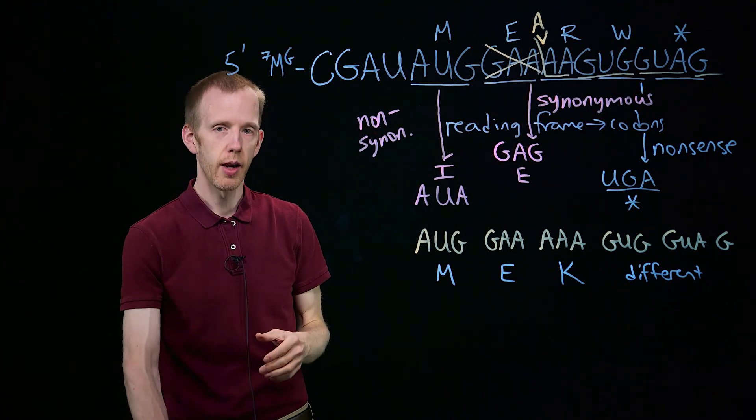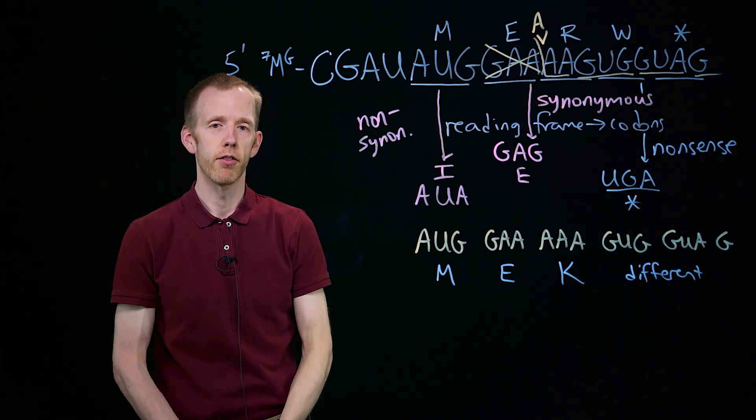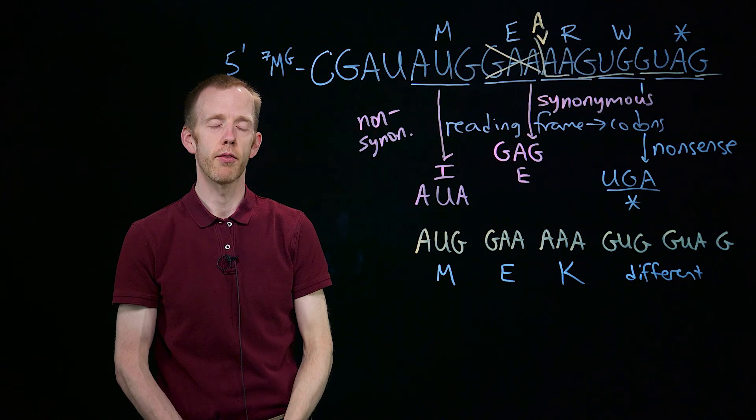So those are a few different types of mutations and effects that they have on the proteins that are produced after translation.